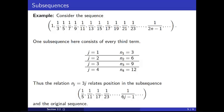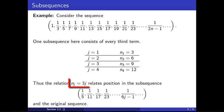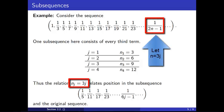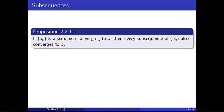Notice that the general term in the subsequence can be identified either by observing the pattern in the first four terms — 1/5, 1/11, 1/17, 1/23 — or by substituting n = 3j into the general term of the original sequence. In class we will prove Proposition 2.2.11, but let's take a look at it briefly along with one application.